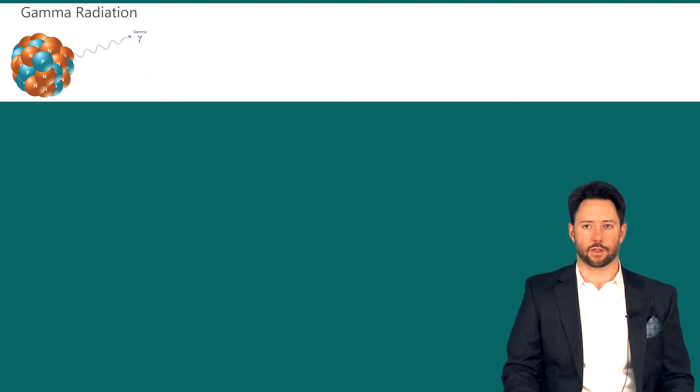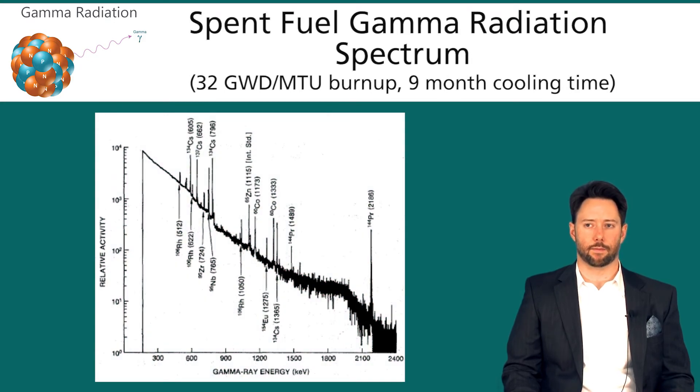Let's start with gamma radiation and take a look at a spent fuel gamma radiation spectrum. This comes from a 32 gigawatt per metric ton burnup assembly with 9 month cooling time.